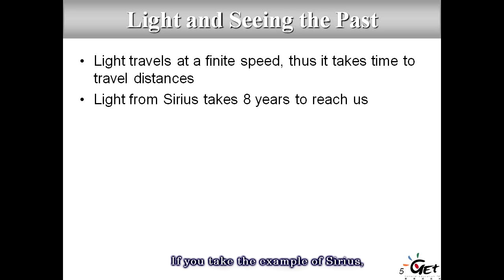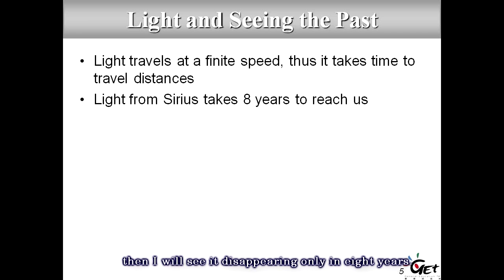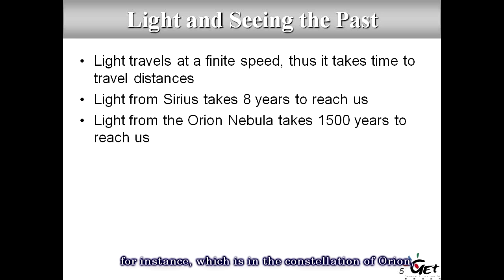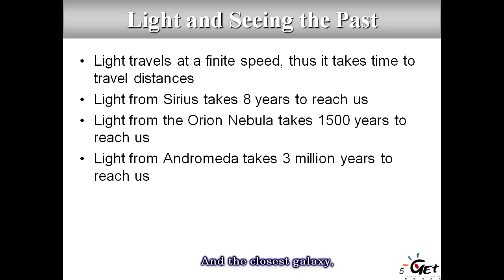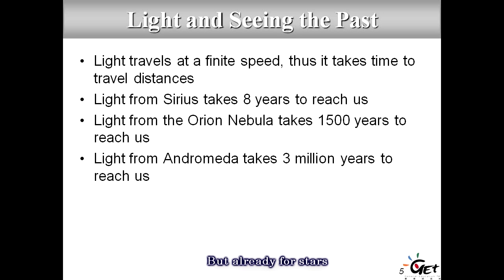Sirius, the brightest star in our sky, is eight light-years away — if it switched off, we'd see it disappear only in eight years. The Orion Nebula takes 1,500 years for its light to reach us. And Andromeda, the closest galaxy, takes three million years — we see it as it was three million years ago. We'll come back to this concept when we discuss galaxies, but already for stars it takes many years for light to reach us.